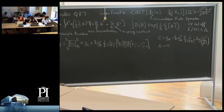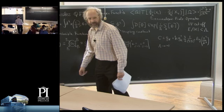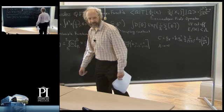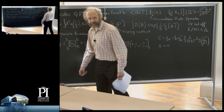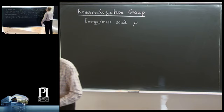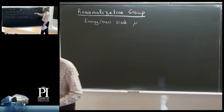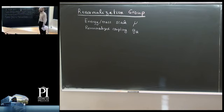Regarding the renormalized field operator: this time-ordered product, the expectation value of the time-ordered product of renormalized field operators, is exactly what you would calculate with the path integral using this renormalized action. It is simply given by a functional integral with the products of φ(x1)...φ(xn) inserted, with the action S_R(φ). The random variable you integrate over in the functional integral gives you the expectation value, the matrix element, of those operators.